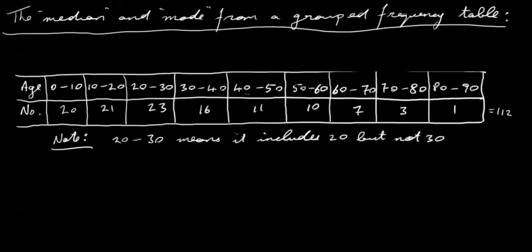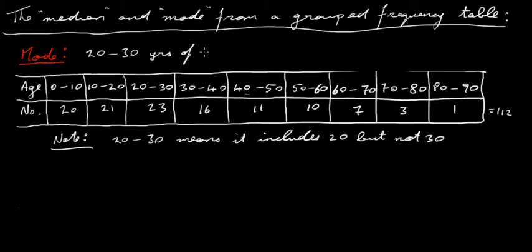So let's just do the mode first — that's the easier one to do. The mode is just the age group that contains the greatest number of people. If we look along here, 23 is the biggest number of people. So 23 people were between 20 and 30 years of age. Our mode here is going to be 20 to 30 years of age — in that particular range.